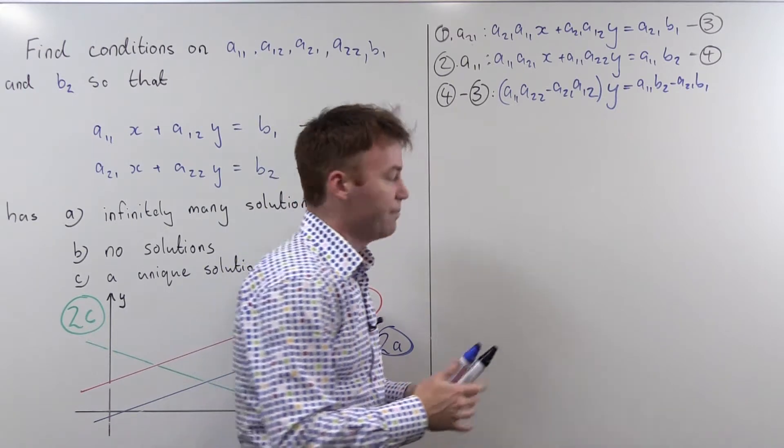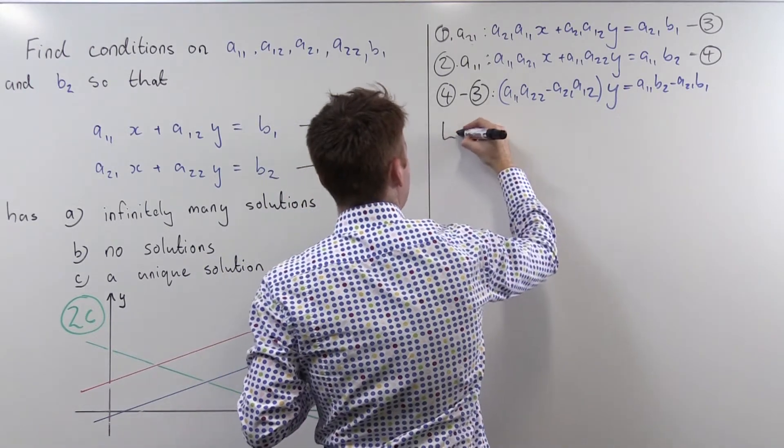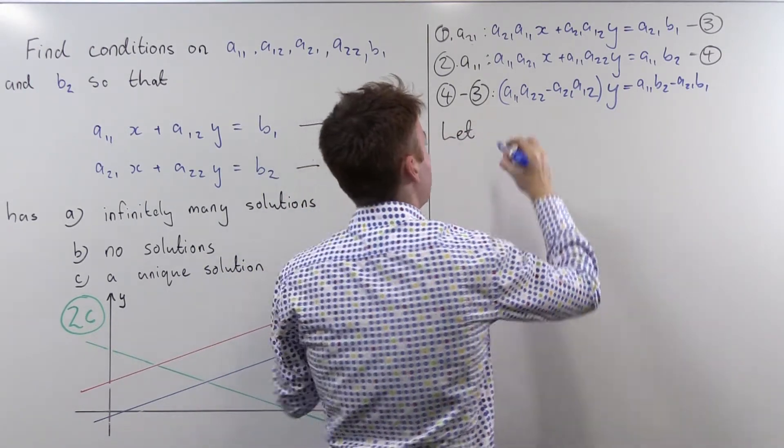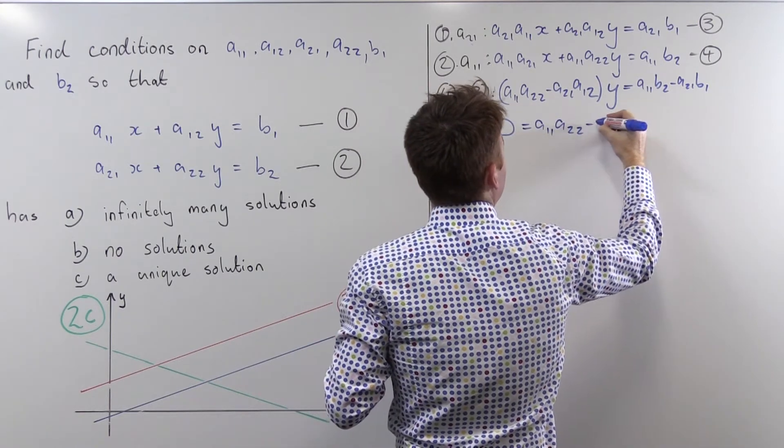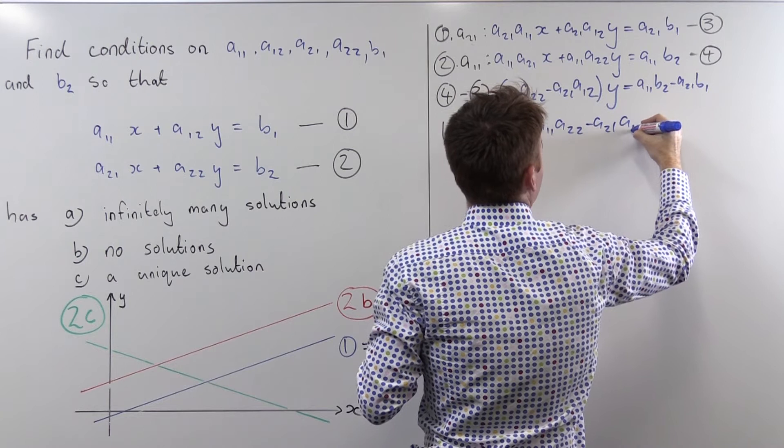It's so important we'll give it a name. We'll call it delta, d for determinant. Let delta equal a₁₁a₂₂ minus a₂₁a₁₂.